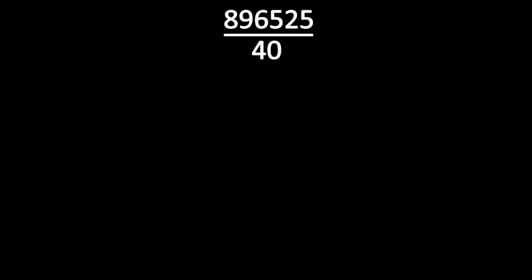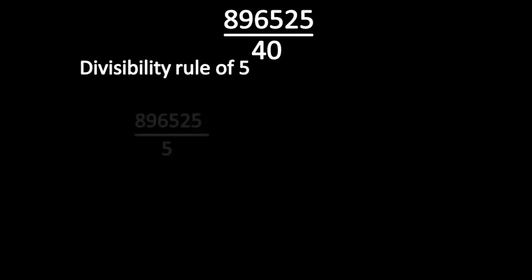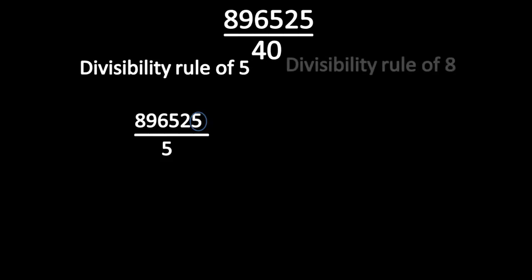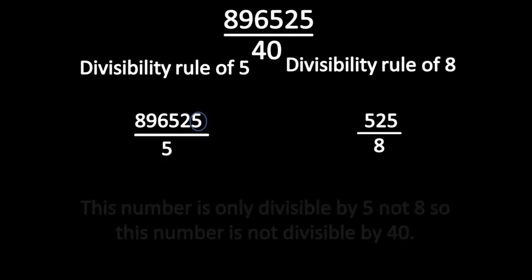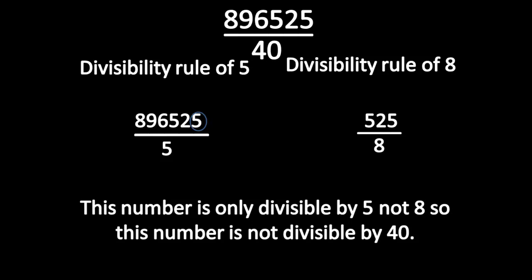Now let us check whether this number is divisible by 40. As per the rule, first check whether this number is divisible by 5. You already know how to use the shortcut method for divisibility of 5. Now let us check whether this number is divisible by 8. This number is not divisible by 8, because when we take the last three digits of the number and divide by 8, the remainder is not 0, so that number is not divisible by 40. This number is only divisible by 5, not 8, so this number is not divisible by 40. Thank you.